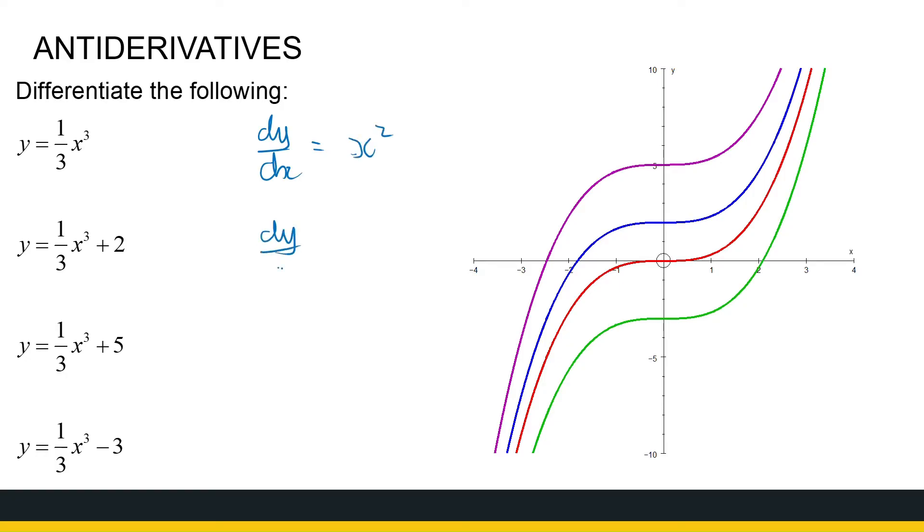The derivative of the second one is x squared plus naught, so it's also x squared. The derivative of the third one, you see the pattern, we also have x squared.